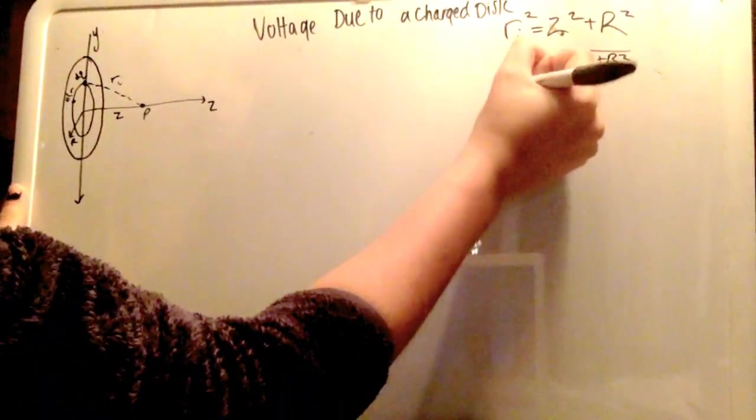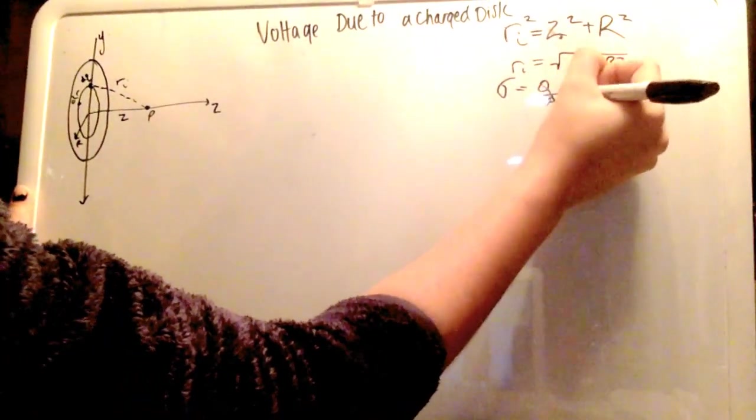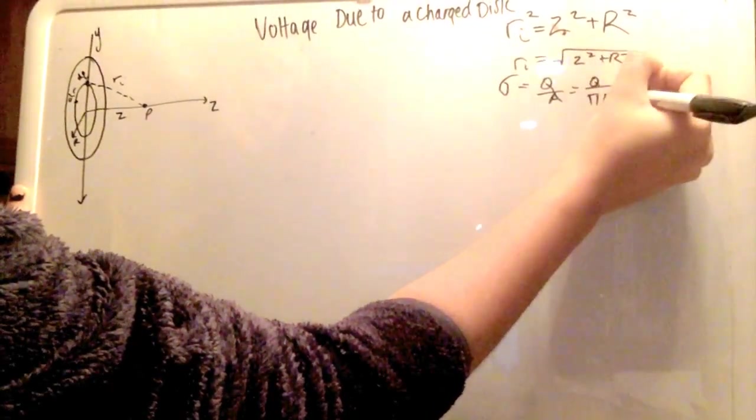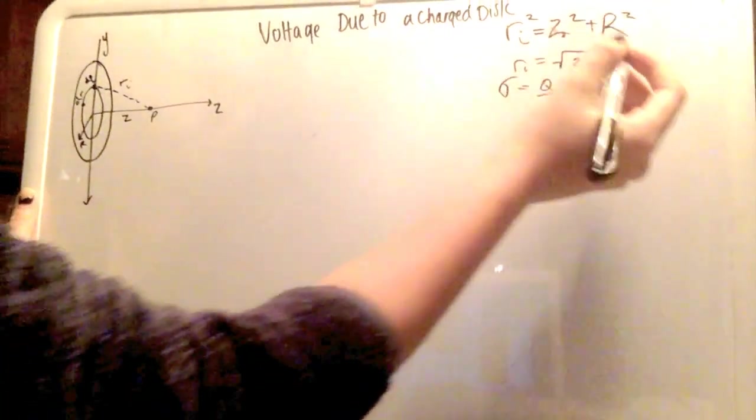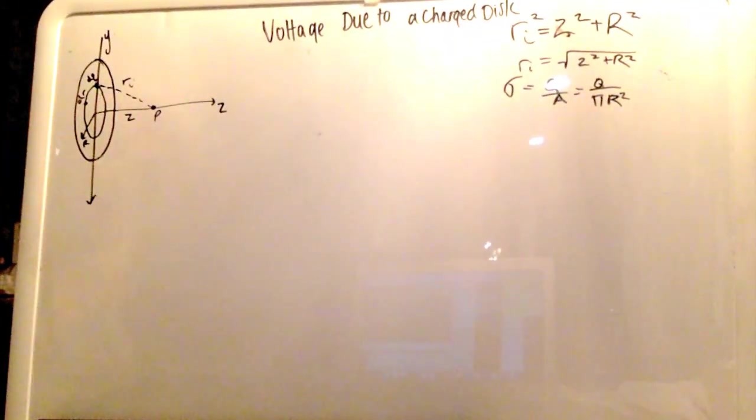The other equations that you need to know is linear charge density is equal to q divided by a is equal to q divided by pi r squared, big r this time. You got to make sure to differentiate between r's.